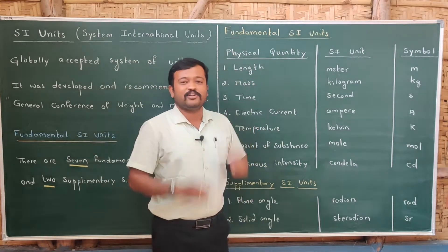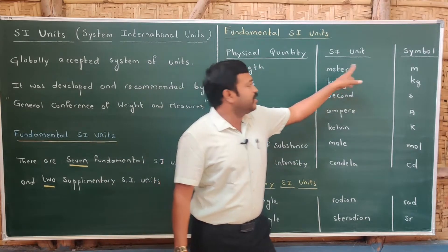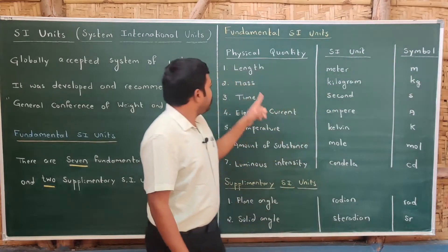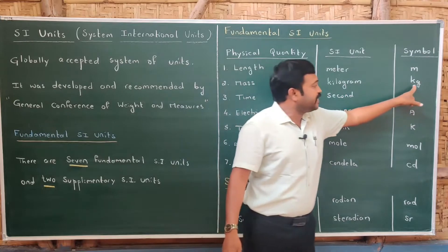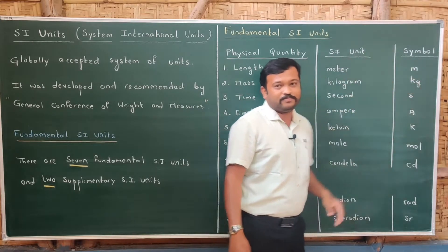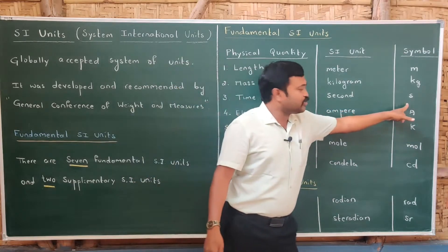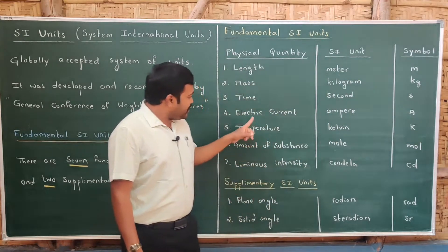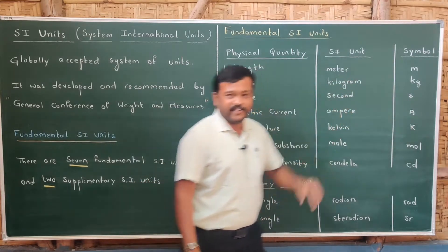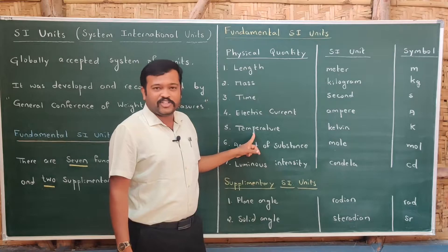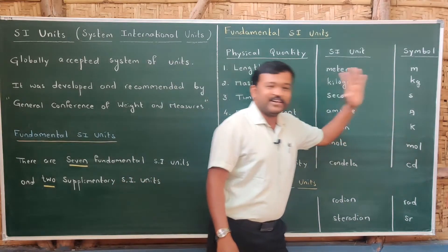The units of these physical quantities are called fundamental SI units. Length is measured in meter, symbol 'm'. Mass is measured in kilogram, symbol 'kg'. Time is measured in second, symbol 's'. Electric current is measured in ampere, symbol 'A'. Temperature is measured in kelvin, symbol 'K'.